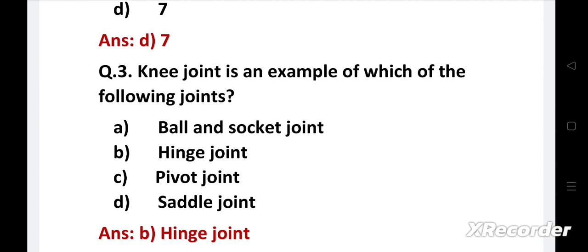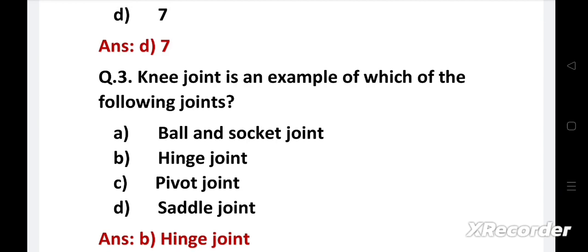Pivot joint is a freely movable joint that allows only rotatory movement around a single axis, for example proximal radial joint, distal radial joint, etc. Saddle joint is a synovial joint where one of the bones forming the joint is concave and the other bone rests on it like a rider on a horse, for example carpometacarpal joint of the thumb.